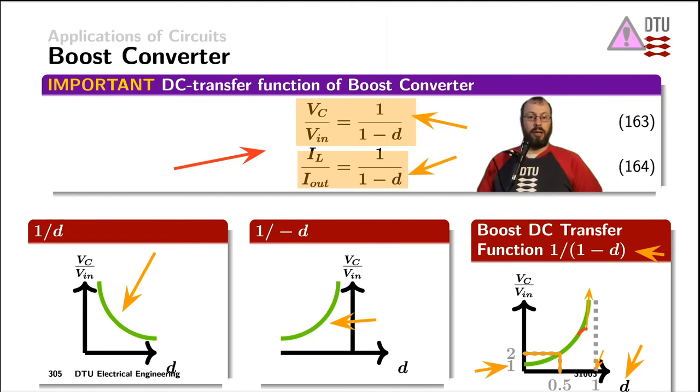And furthermore, we would have voltage drops across the parasitics of the components. For example, the forward voltage of the diode, and eventually, the transfer function would actually return down to zero.